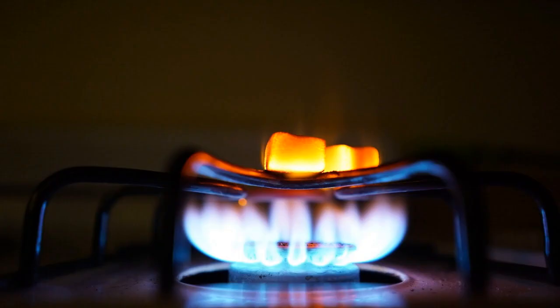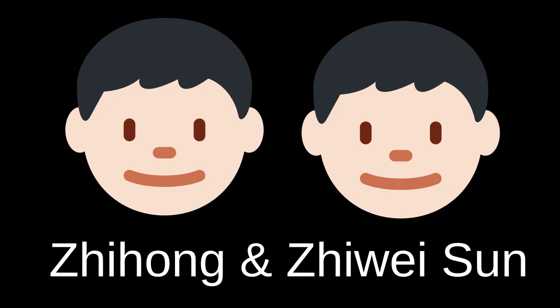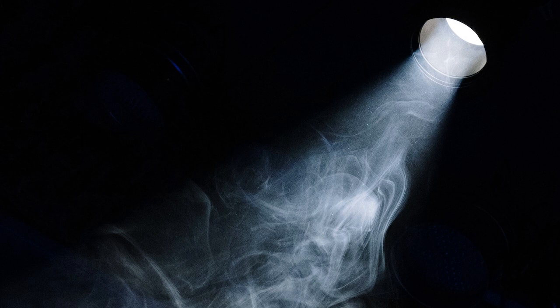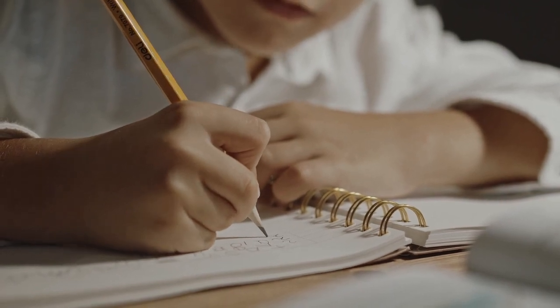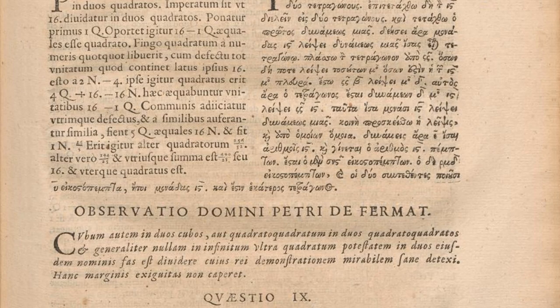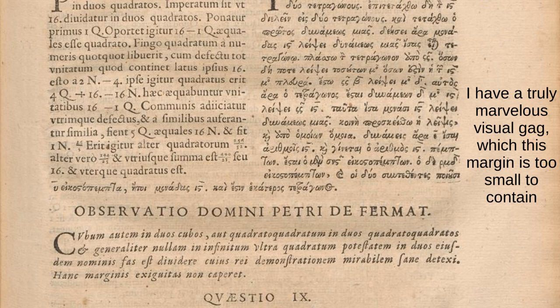This question was put on the proverbial mathematical backburner for a while until the twin brothers Zhe Hong and Zhe Wei Sun brought them into the spotlight in 1992. The Sun twins managed to show that if a prime number was an exception to the first case of Fermat's Last Theorem, it would have to be an exception to Wall's conjecture as well.